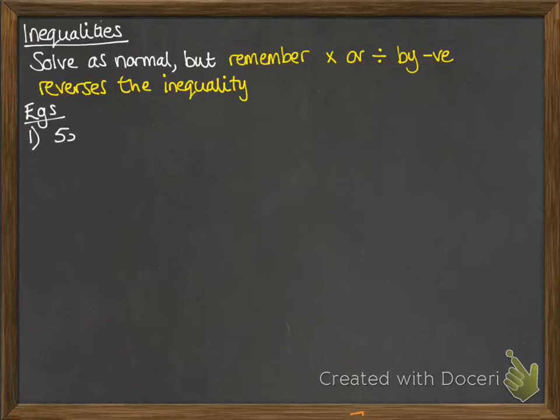So let's have a look at some examples. Here's our first one: 5x minus 3 is greater than 7. So we'll add 3 to both sides. We get 5x is greater than 10, which gives us x greater than 2. Solved in exactly the same way you would have done if this had said equals instead of greater than.